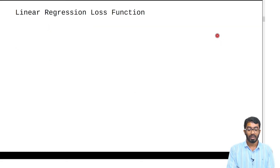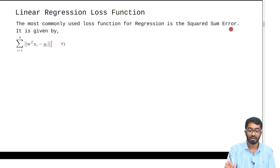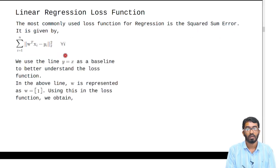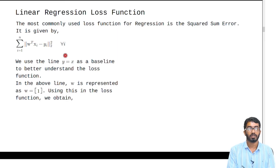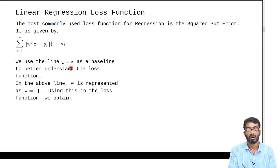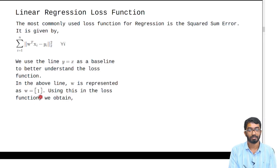Before moving on to the algorithm itself, we will first discuss the loss function. The most commonly used loss function for regression is the sum squared error, which is given by this equation. For understanding this loss function further, we take y equal to x as a baseline model, where w is given by 1.